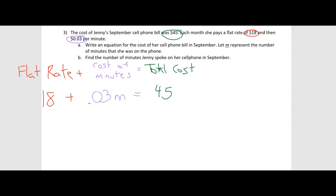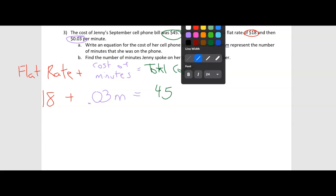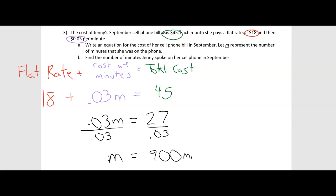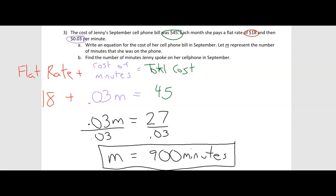Now we solve the equation. Subtracting 18 from both sides gives 0.03M = 27. Dividing both sides by 0.03 gives M = 900. So Jenny was on the phone for 900 minutes in September — that's about 30 minutes per day.